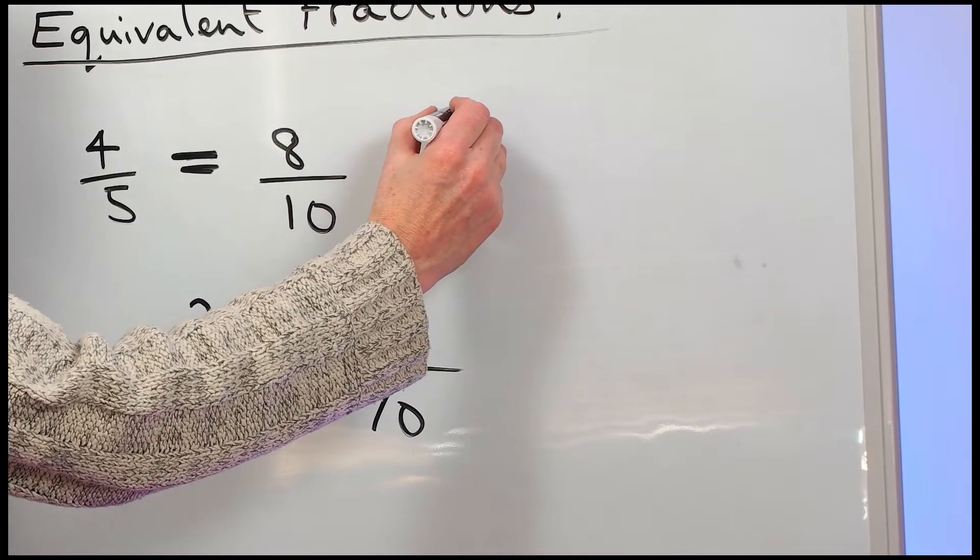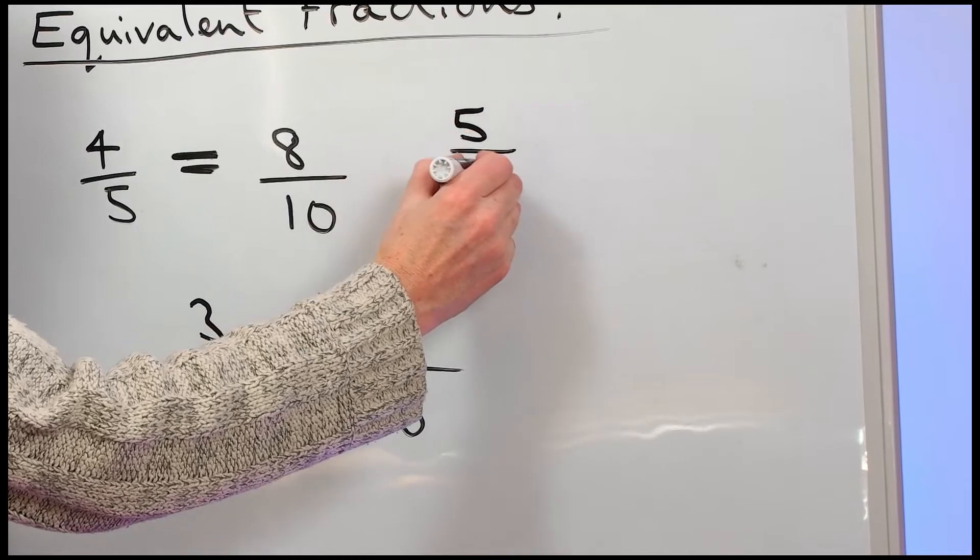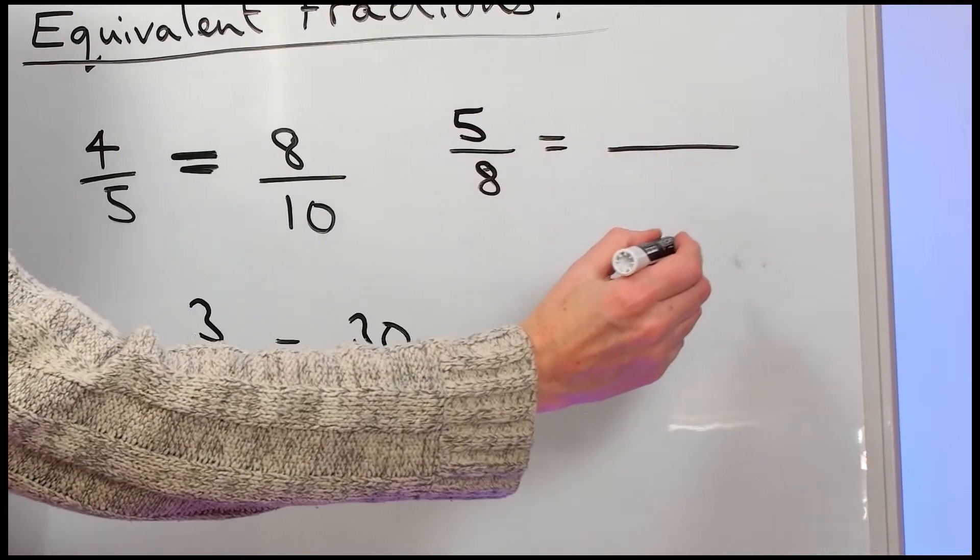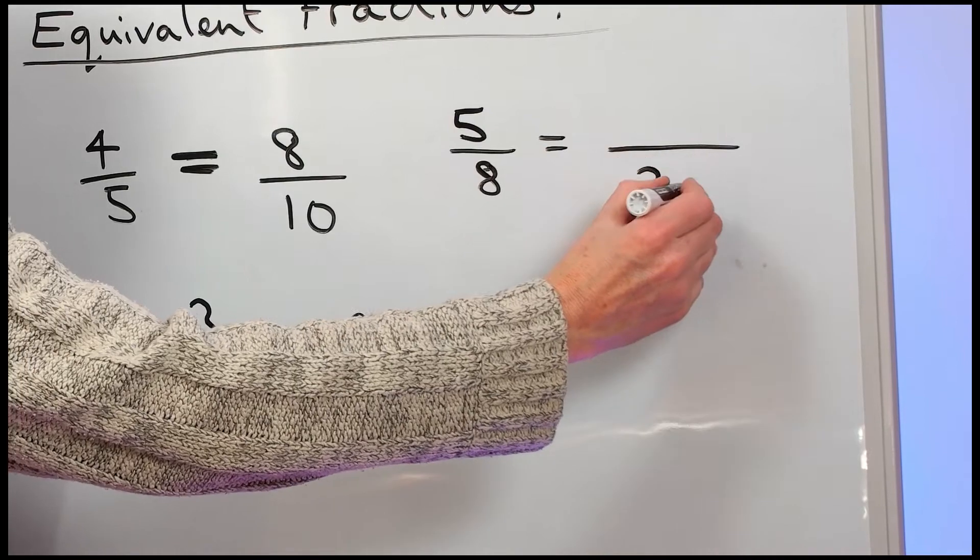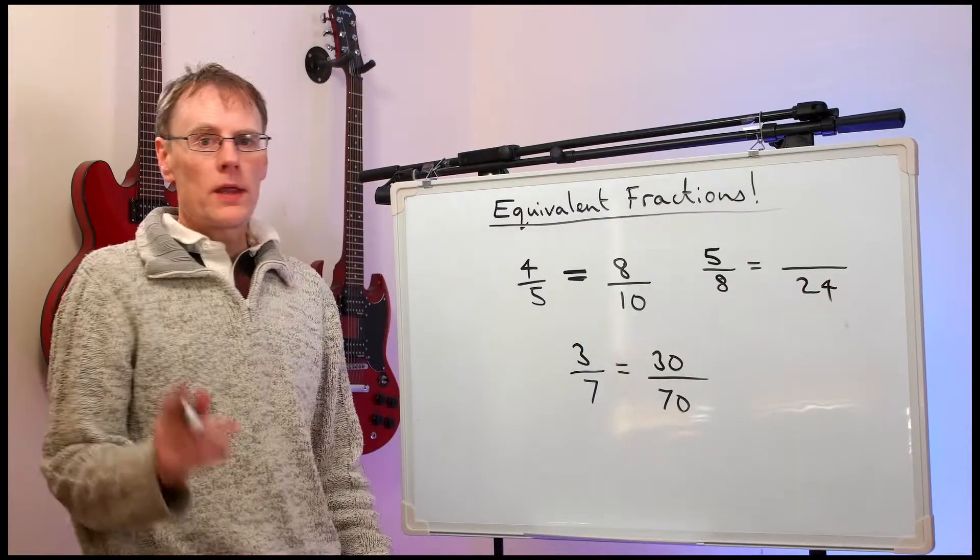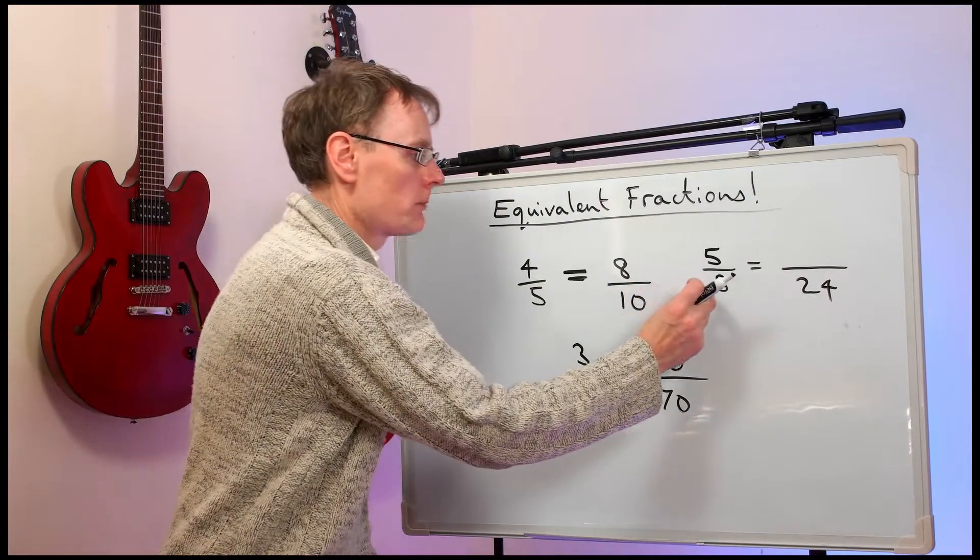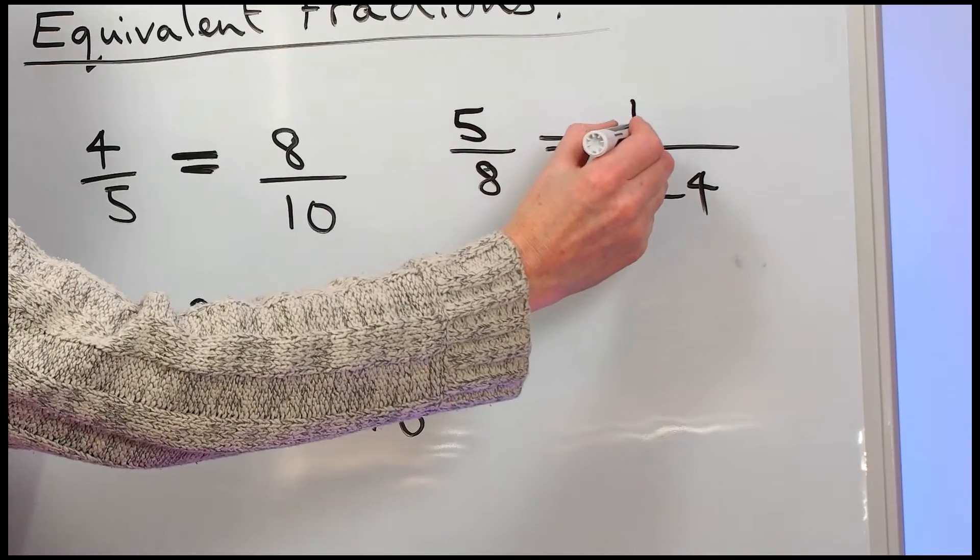Let's look at five-eighths. Five-eighths is the same as something out of twenty-four. Well here the bottom has been multiplied by three so we multiply the top by three. We get fifteen twenty-fourths.